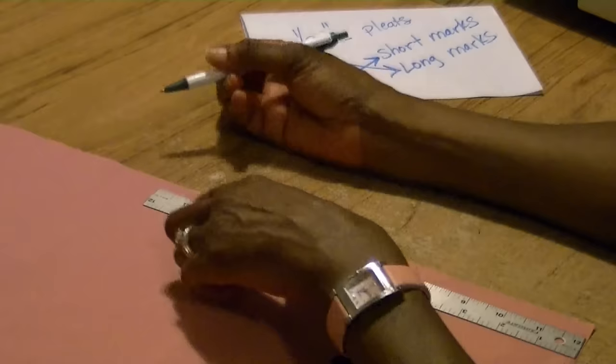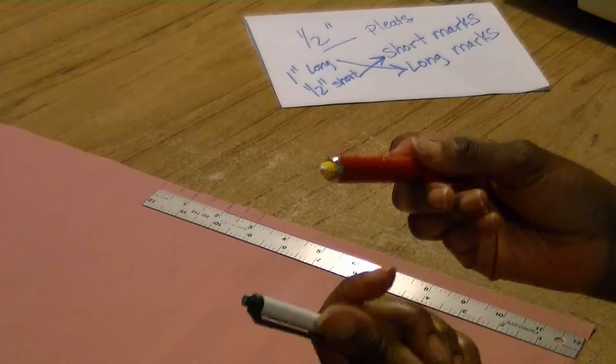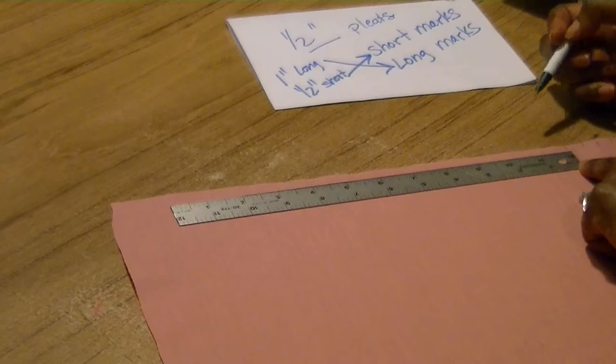Using my ruler, I'm marking the short mark at the half-inch mark and the long mark at the one-inch mark. I'm doing this with a pen, but you want to use chalk—something that will disappear in the fabric that won't make a permanent mark. You want to make these marks all the way across your entire fabric.